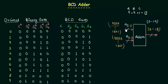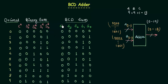When you add A and B you will get the result — the sum in binary form, so we call it the binary sum. It is not the BCD sum; it will be the binary sum. We want the output to be in BCD form, which is used in clocks and digital watches. So we need to convert the binary sum to the BCD sum — that is all the BCD adder does.